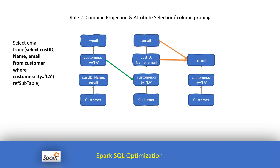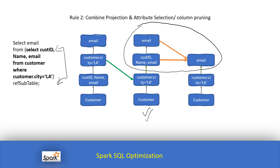The second rule is combining projection and attribute selection. The idea is that we have already applied a filter to select only customers belonging to city LA. Now we have two projections: one in the subquery selects customer ID, name, and email, but we really only need email. So we combine these projections.